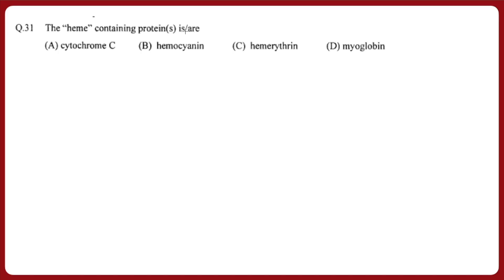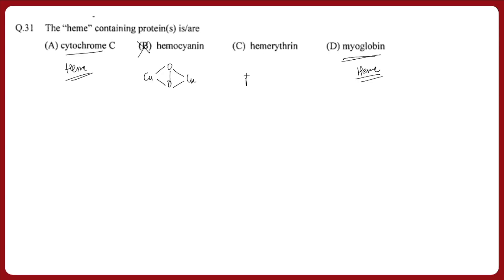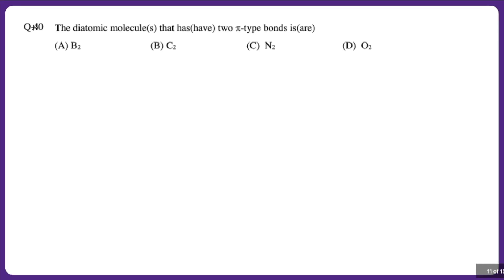The next question, from bioinorganic chemistry, asks: which of the following are heme-containing proteins? Cytochrome C has a heme group — it is a heme-containing protein. Myoglobin is a very well-known heme-containing protein. Hemocyanin is not heme-containing — it has a copper-based dioxygen binding site. Hemerythrin also does not have a heme group — it is iron-based but not heme. The heme-containing proteins are options A and B.